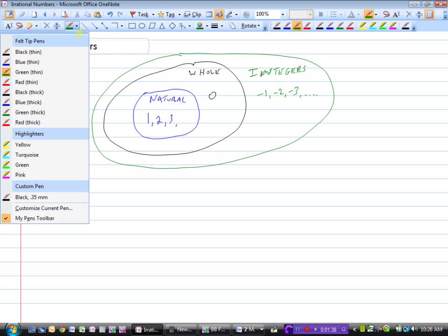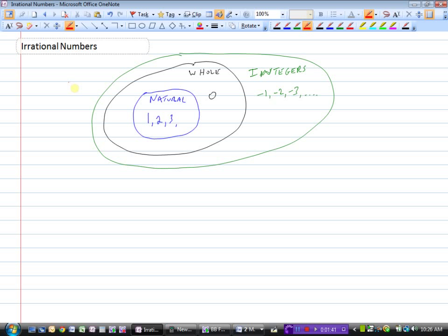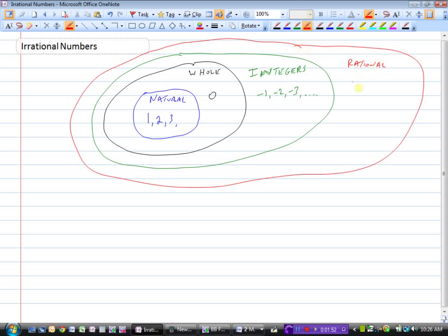And then we could add the rational numbers, which are all of these plus we start to add all of the fractions, like 3/7 and 5/9, and there are also numbers that have decimals...